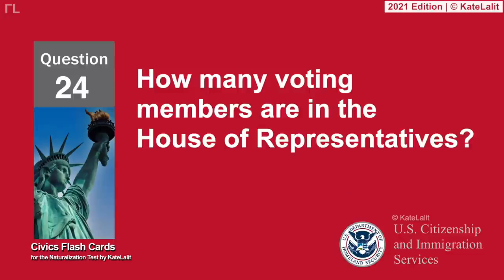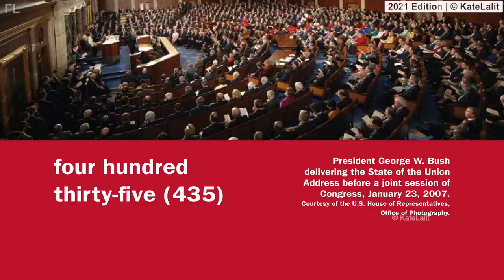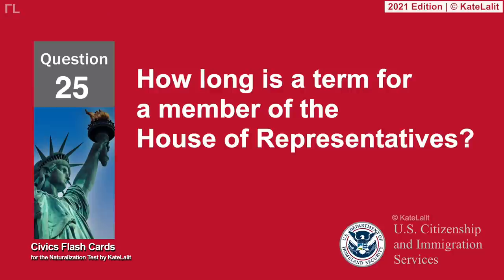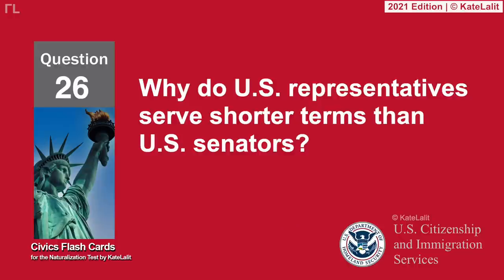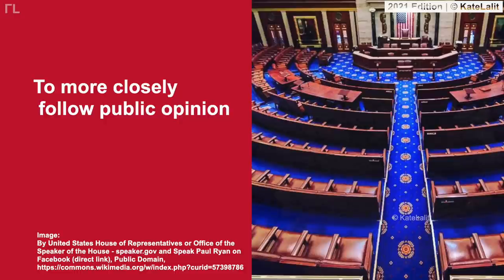How many voting members are in the House of Representatives? 435. How long is a term for a member of the House of Representatives? Two years. Why do U.S. Representatives serve shorter terms than U.S. Senators? To more closely follow public opinion.